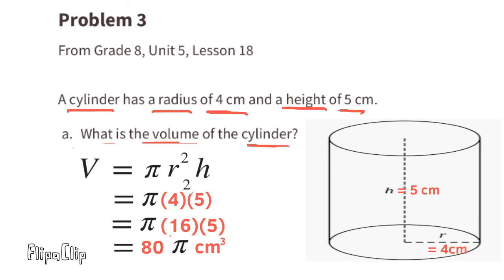And since 16 times 5 is 80, we can rewrite this as π times 80 centimeters cubed, or 80 times π centimeters cubed. So the volume is 80π cm³.